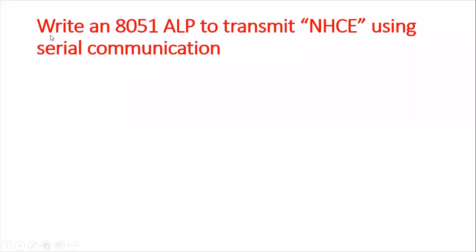Let us discuss how to write an 8051 assembly language program to transmit a string NHCE using serial communication. To proceed, a few basic details should be known: what is the baud rate, how to generate the baud rate, what registers are used, and the use of SCON and SBUF registers. If you have those basic ideas you can proceed, otherwise refer to the previous videos about serial communication.